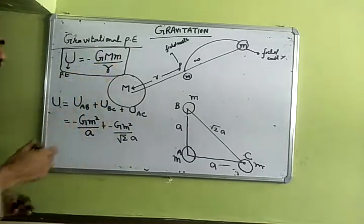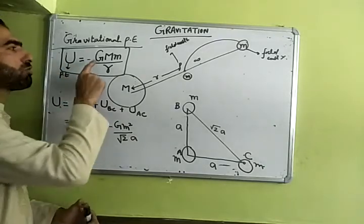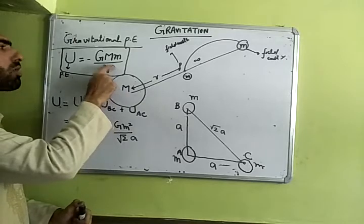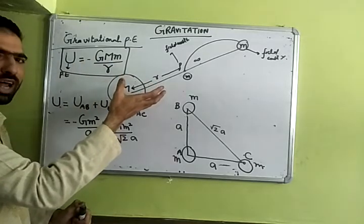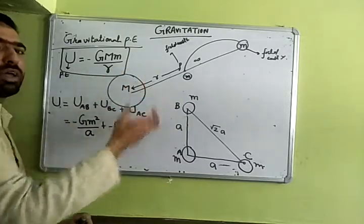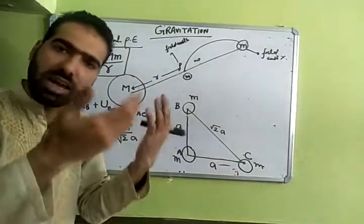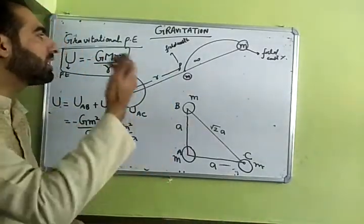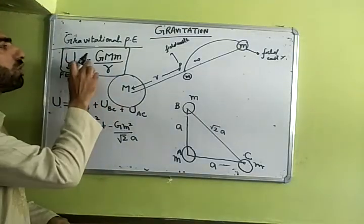You can remember this gravitational potential energy like this: just as electrostatic or gravitational force is G M M by R, reduce one R and keep the sign negative. Why is the sign negative? Because the forces are attractive in nature. Whenever you bring a body closer in this system, its potential energy decreases.